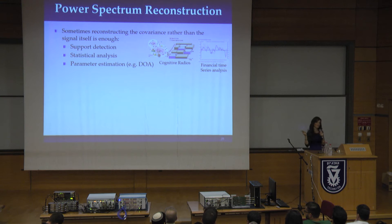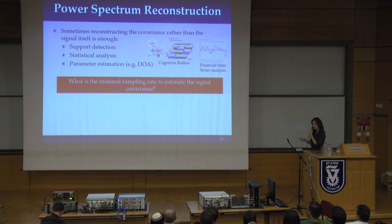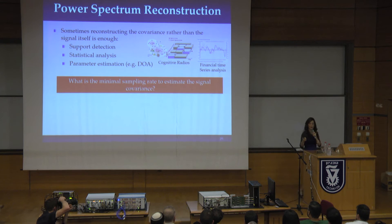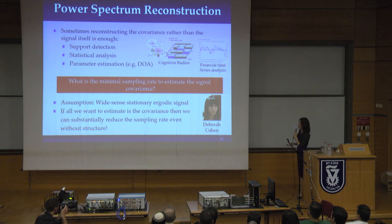This actually raises a very interesting fundamental mathematical question that surprisingly hasn't been looked at much in sampling theory: suppose we have a signal and we want to sample it not in order to recover it, but in order to recover its spectrum or, more generally, its statistics. What is the minimal rate that we need in order to recover the signal statistics? It turns out that the minimal rate is very low — and Debbie's talk will go into the details of minimal sampling rates for estimating covariance.